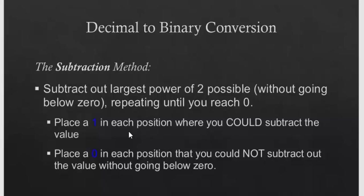Here's another method for decimal to binary conversion. This method is simpler for those who can remember powers of 2 up to n terms, say up to 2 to the power 8 or 16. The method is: place 1 in each position where you can subtract the value, and place 0 if you cannot subtract without going below zero.